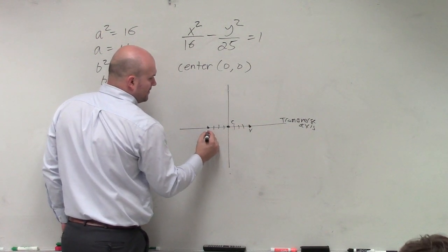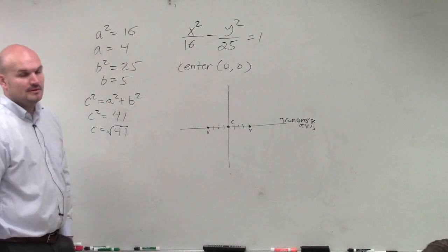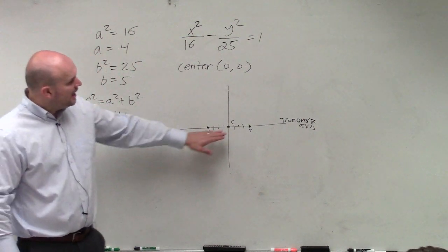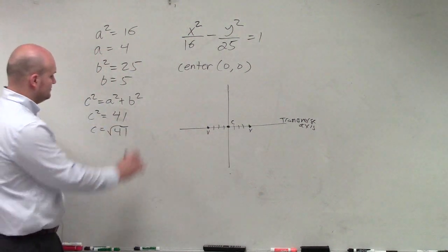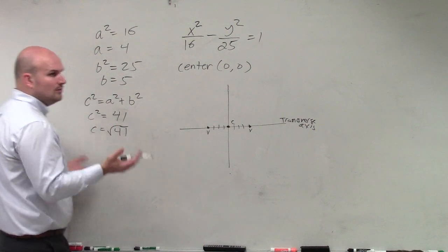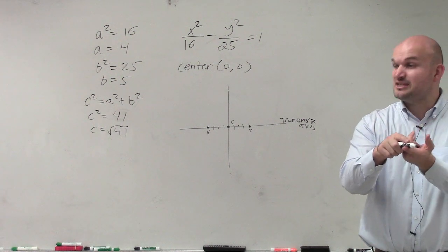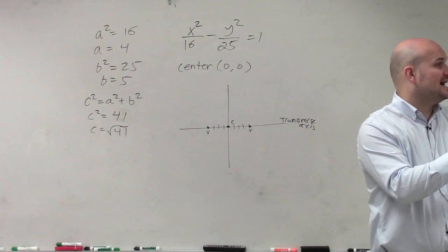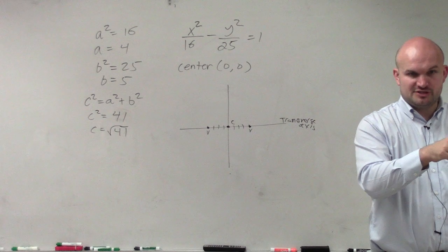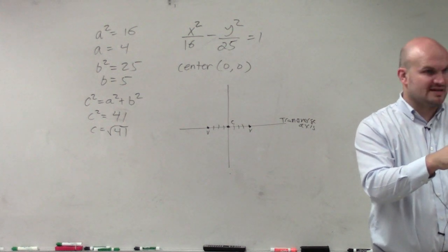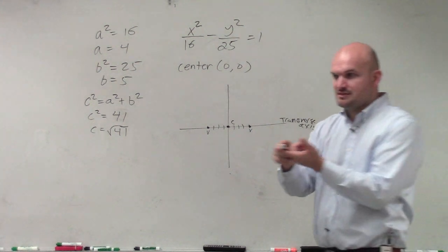There's my other vertex. OK? To find my foci, that's going to be square root of 41. Well, guys, think about what square numbers are around 41. You have square root of 36, which is 6, and square root of 49, which is 7. So would you guys agree that square root of 41 is somewhere between 6 and 7? Does that kind of make a little sense?